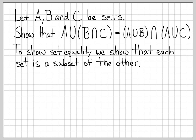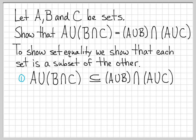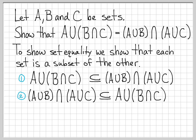If we want to use that strategy in this problem, we need to do two things: show that A union B intersect C is a subset of the right-hand set, and show that the right-hand set is a subset of the left-hand set. If we can establish these two things, that means every element in the left set is also in the right set, and every element in the right set is also in the left set. So these sets have to be equal since they have the same elements.